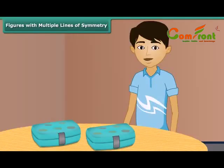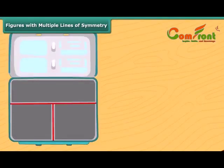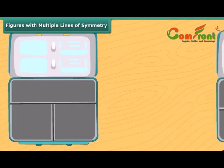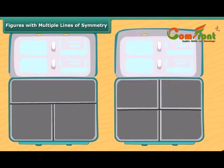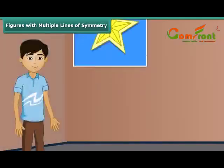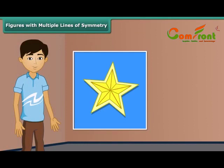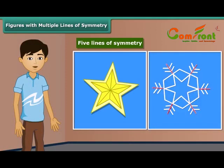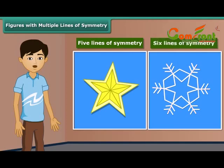Archie has two lunch boxes. One has three lines of symmetry — she doesn't like this box and keeps it away. She picks up another one: this box has four lines of symmetry. Children, look at this beautiful star — you can see the star has five lines of symmetry. What about this pattern? It has six lines of symmetry.